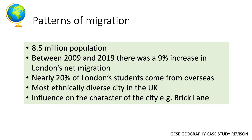This influx of migrants has led to London becoming the UK's most ethnically diverse city, which has had an impact on the character of the city. For example, Brick Lane is famous for its curry houses due to the Bangladeshi community settling in the area.